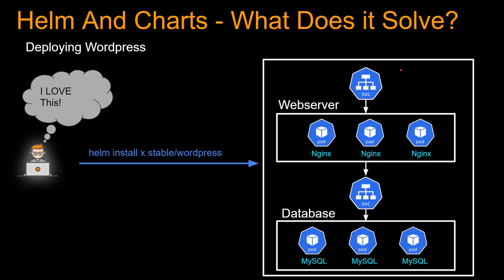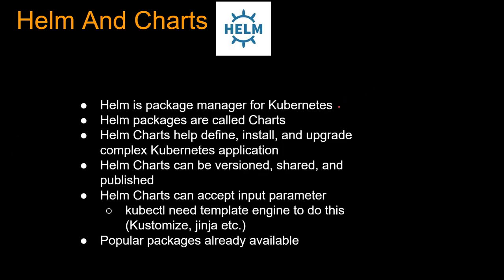Helm is a package manager for Kubernetes — think of it like doing a 'yum install' or 'pip install' for a popular package. It installs the package along with all its dependencies. The Helm packages are called charts. A chart is a collection of files that describe all your Kubernetes resources. A single chart can be used to deploy something simple or something complex, like the WordPress example.